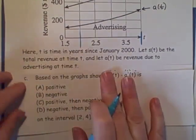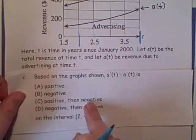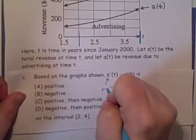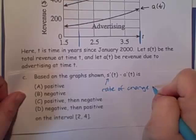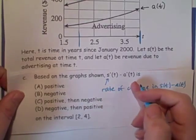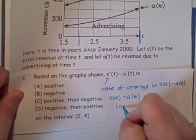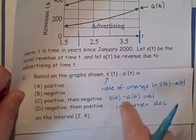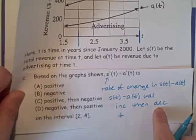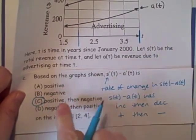Let's look at part c. Based on the graph shown, s'(t) minus a'(t) is positive, negative, positive then negative, or negative then positive, again on that interval two to four. So this is the rate of change in s(t) minus a(t). We just said in the previous part b that s(t) minus a(t) was increasing, then decreasing. So if s(t) minus a(t) is increasing, that means its derivative is positive. And when it's decreasing, that means its derivative is negative. So our answer here is positive, then negative.